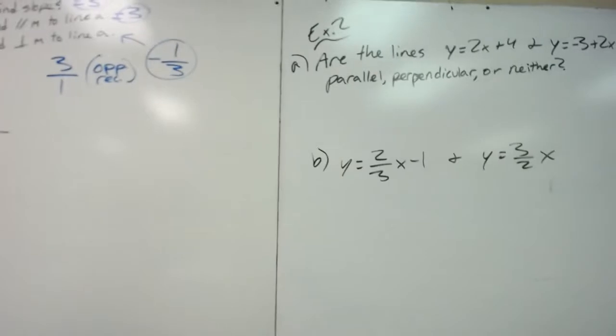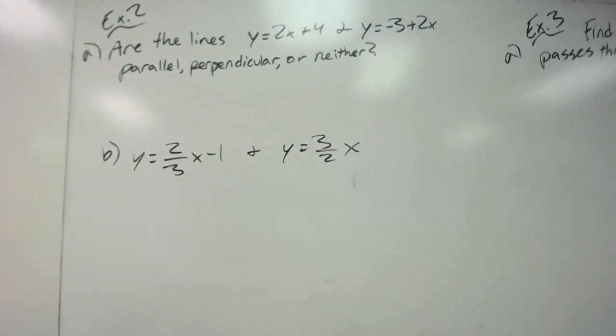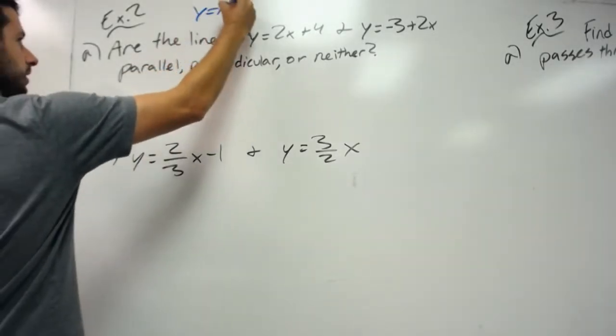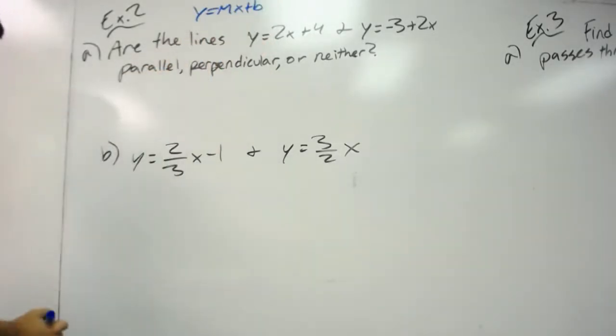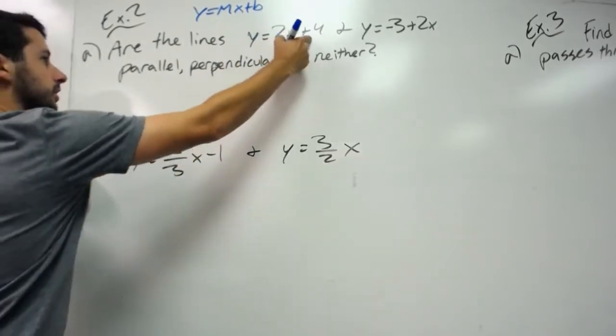Now let's look at more types of problems. Example 2 says, are the lines y equals 2x plus 4 and y equals negative 3 plus 2x parallel, perpendicular, or neither? First we want to get these in y equals mx plus b form, because we'll be able to see it better in that form.